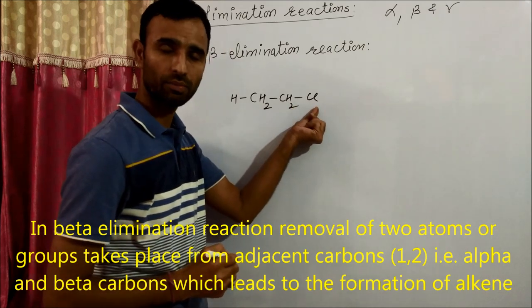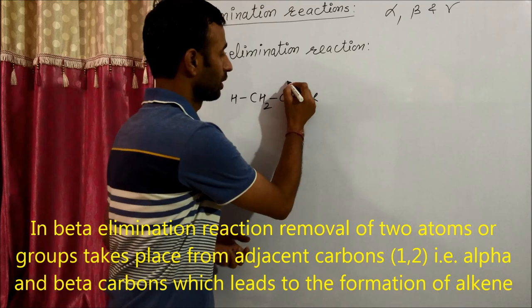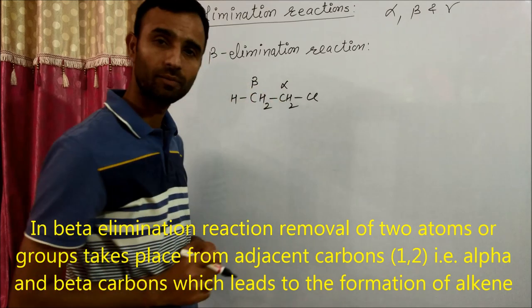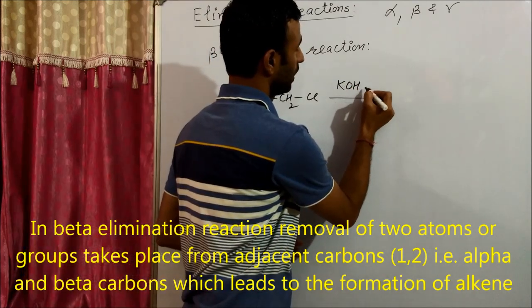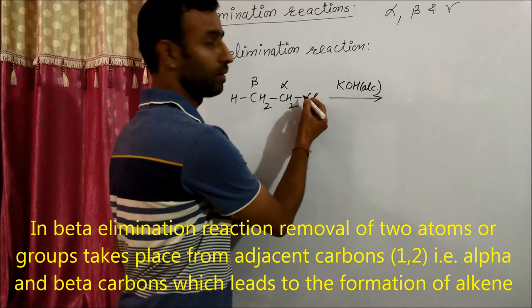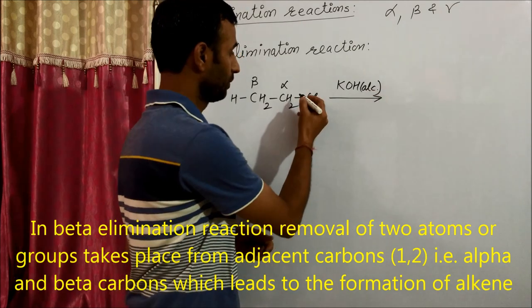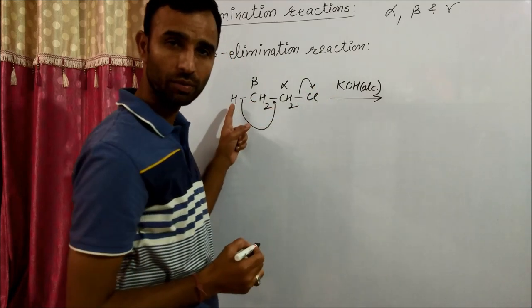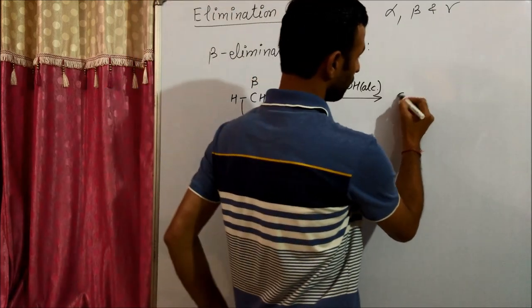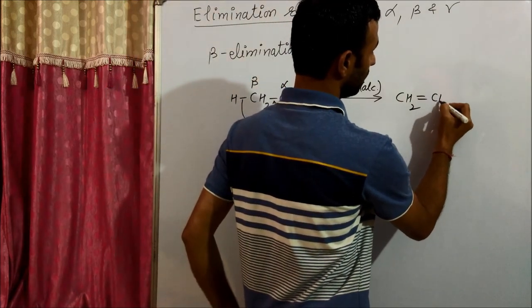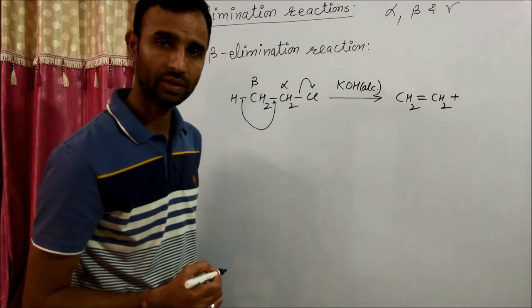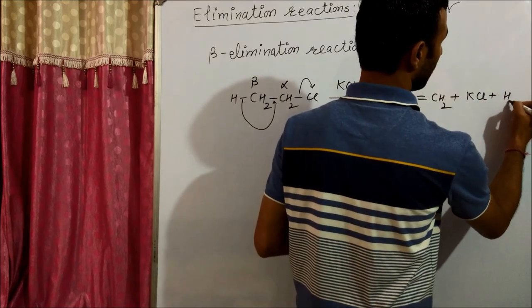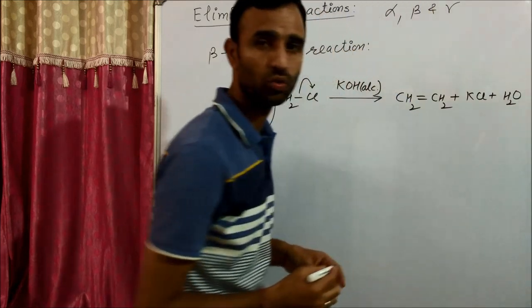The carbon attached to this typical leaving group chlorine is the alpha carbon, and its adjacent carbon is beta. In the presence of base, Cl is removed as Cl negative and H is removed as H positive. In this way, we get ethene or alkene along with KCl and H2O.